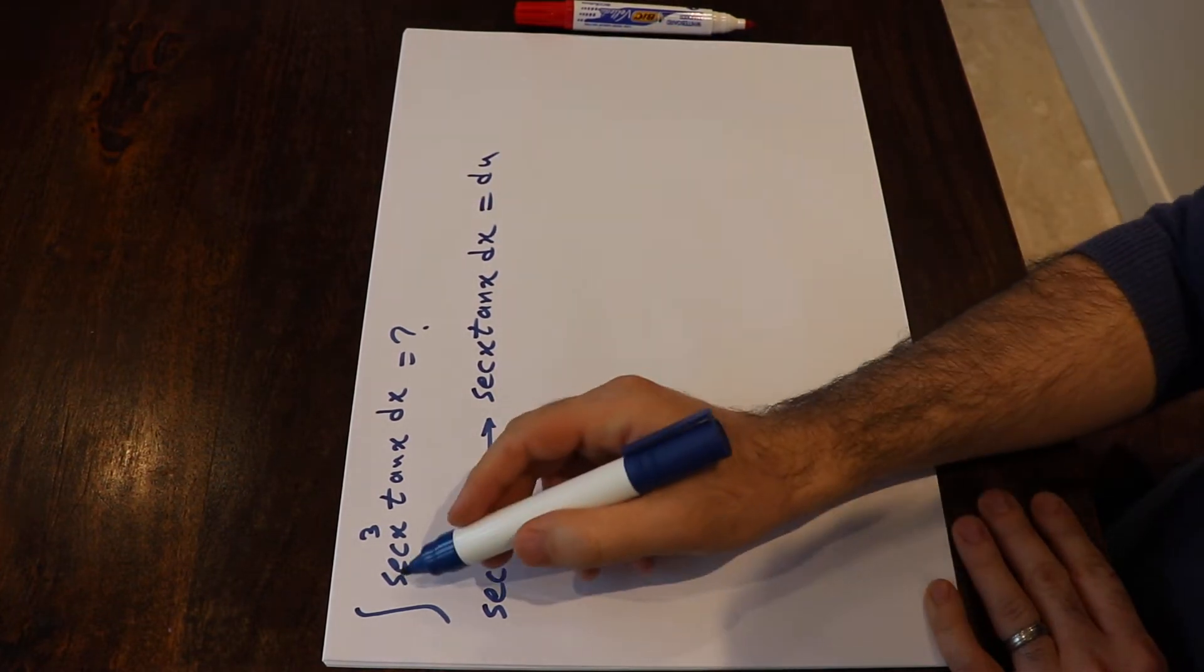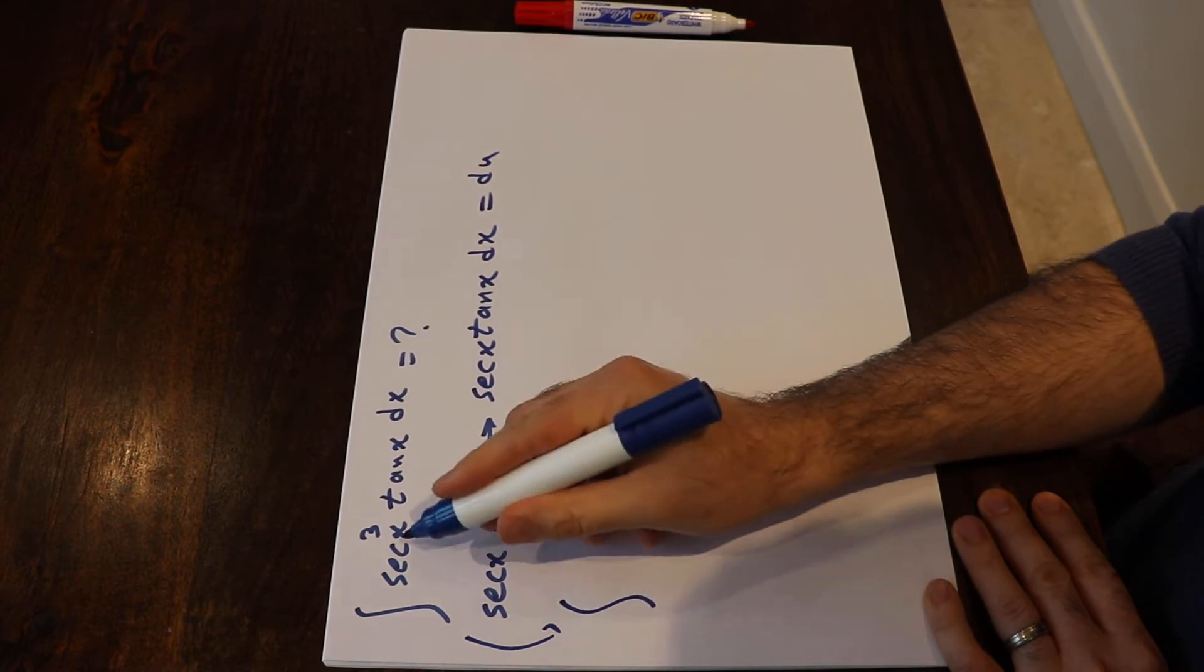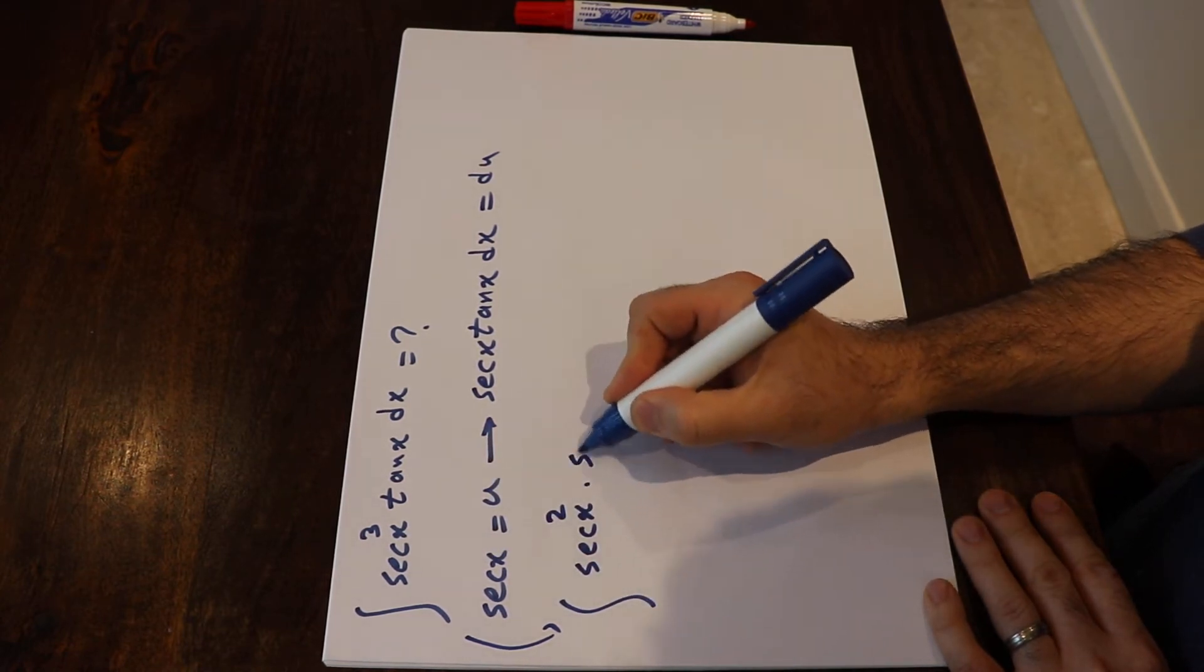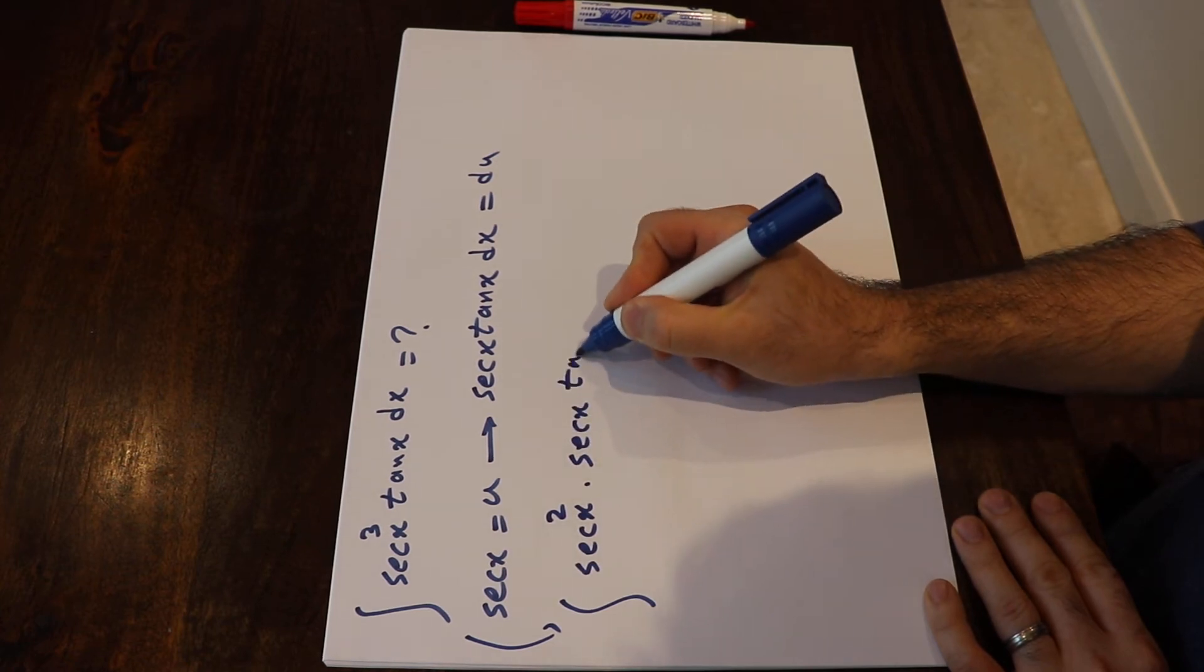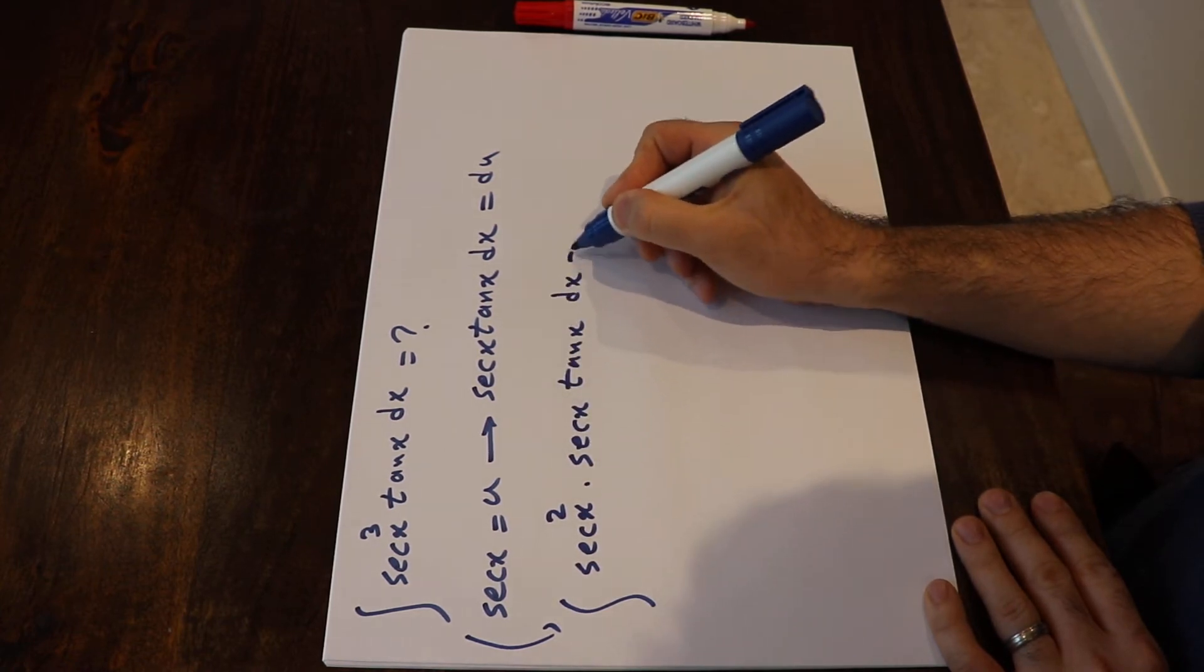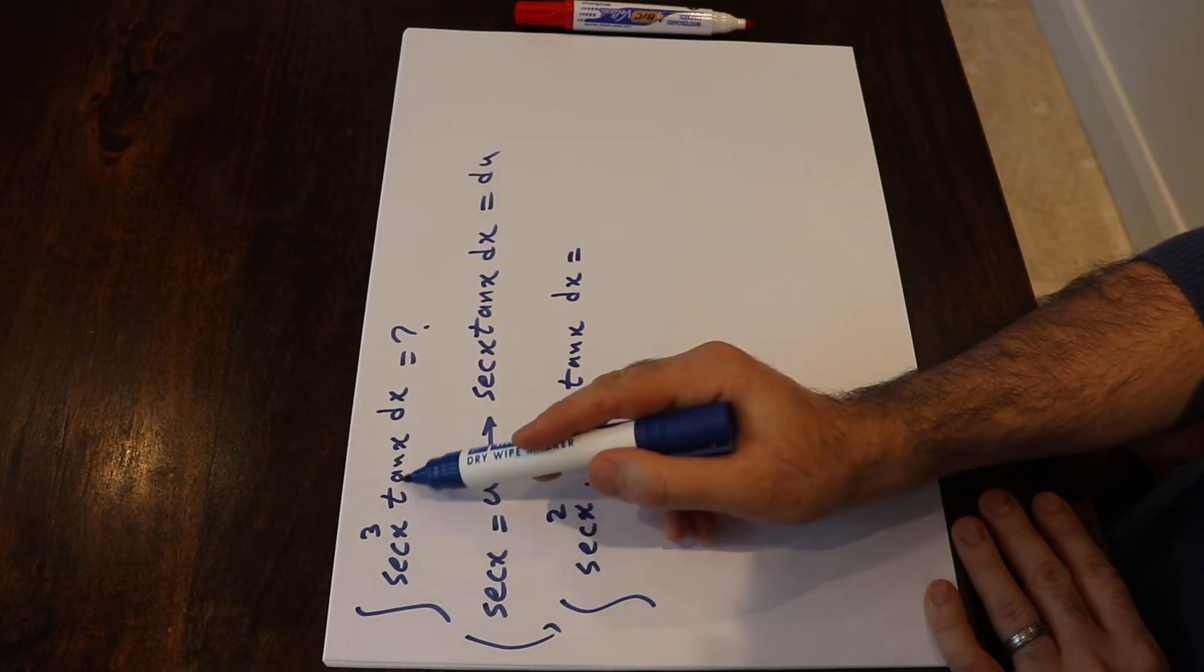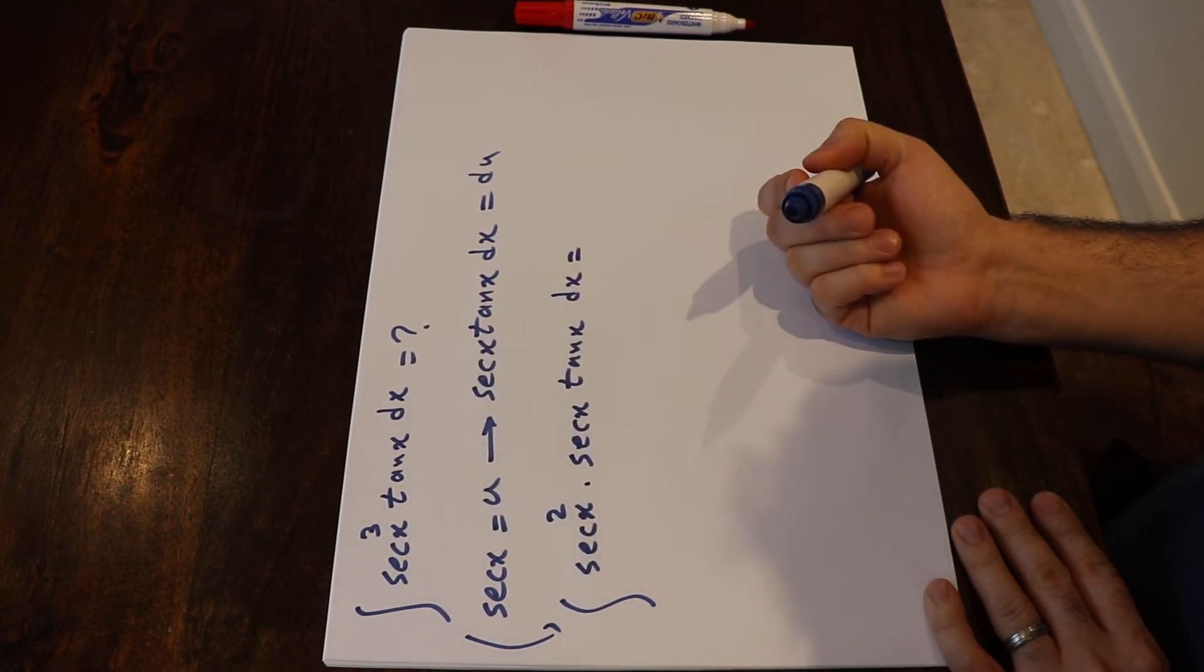So this integral you can rewrite it as sec²x times sec x tan x dx. Because sec²x times sec x will be sec³x times tan x. So these two integrals are the same.